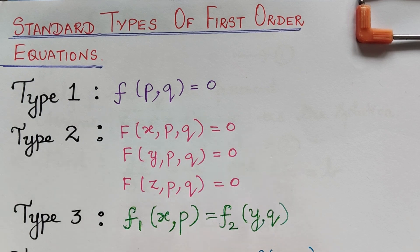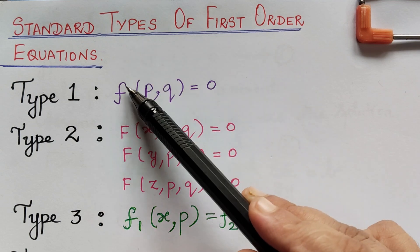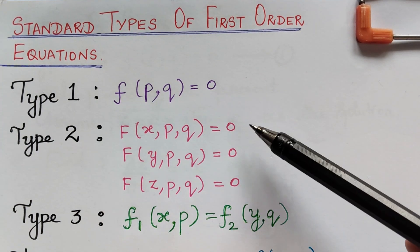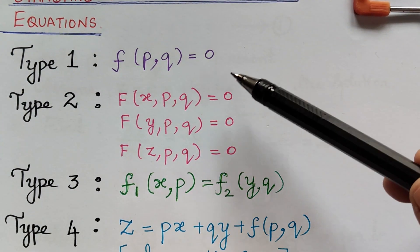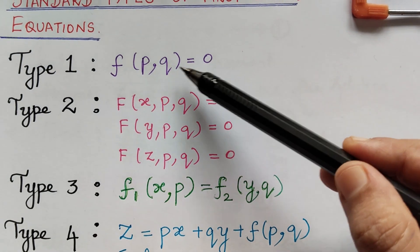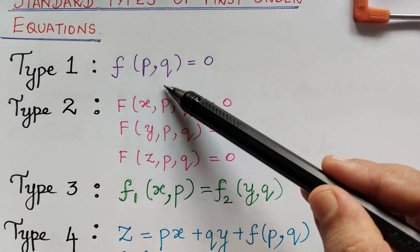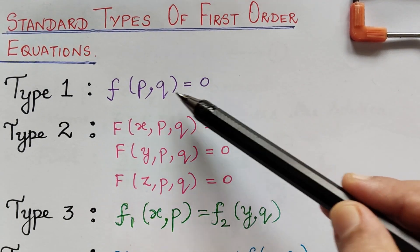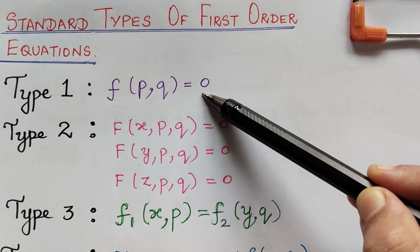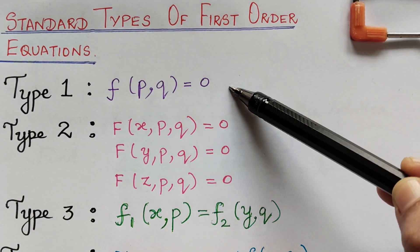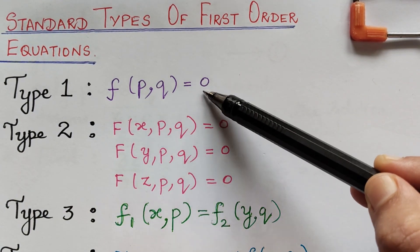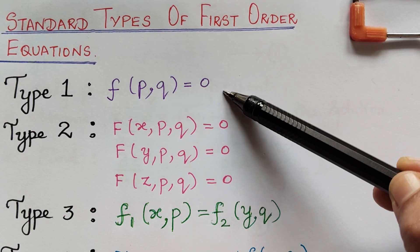We have the standard types of the first order equations. We will be learning four types of partial differential equations. The first type is f of p, q is equal to 0, which means x, y and z will not be present in the equation explicitly and only p and q will be present.